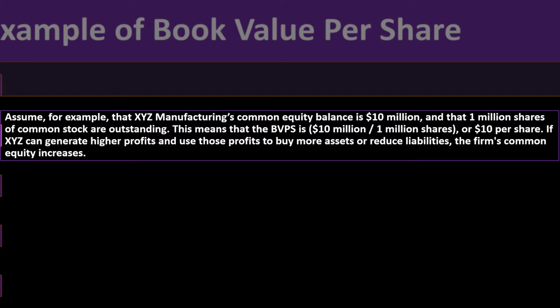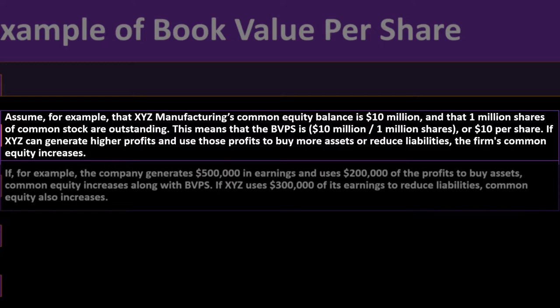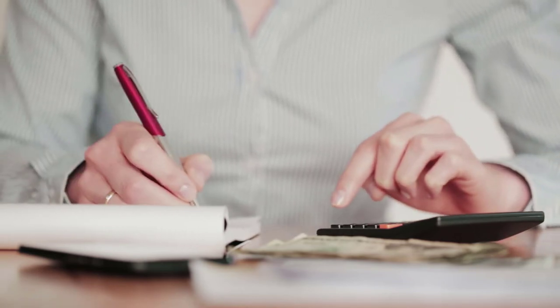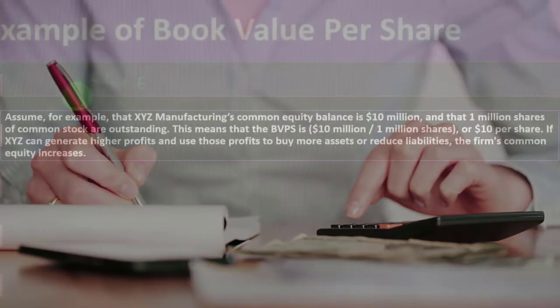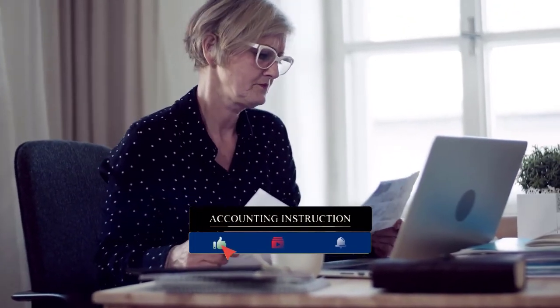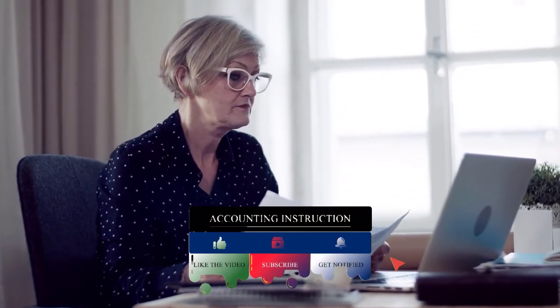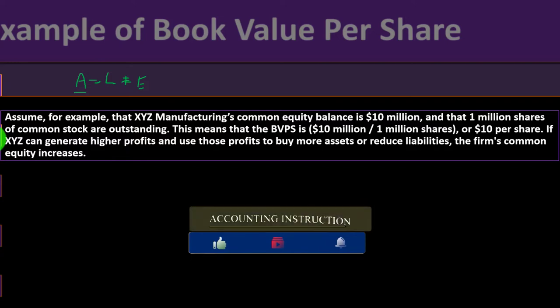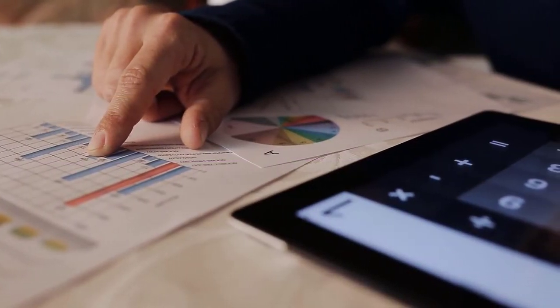If XYZ can generate higher profits and use those profits to buy more assets or reduce liabilities, the firm's common equity increases. Assets equal liabilities plus equity, so if they generate revenue and buy more assets, assets minus liabilities — which equals equity — would go up accordingly. And if people start to feel that the company will generate profits in the future, the market price might go up higher than the book value per share, because they see value above and beyond the book value through management and future revenue potential.